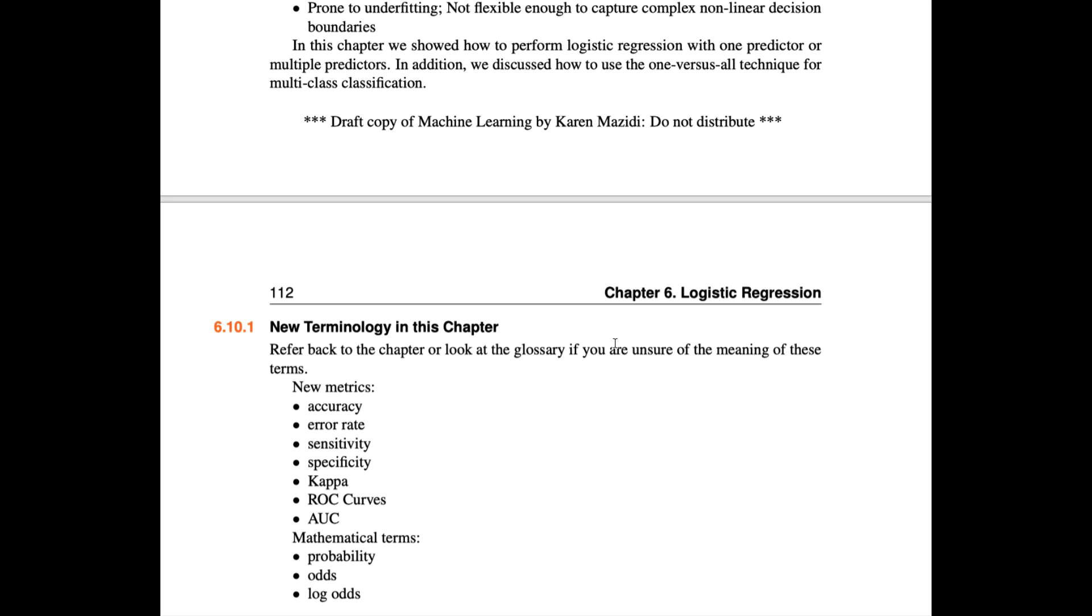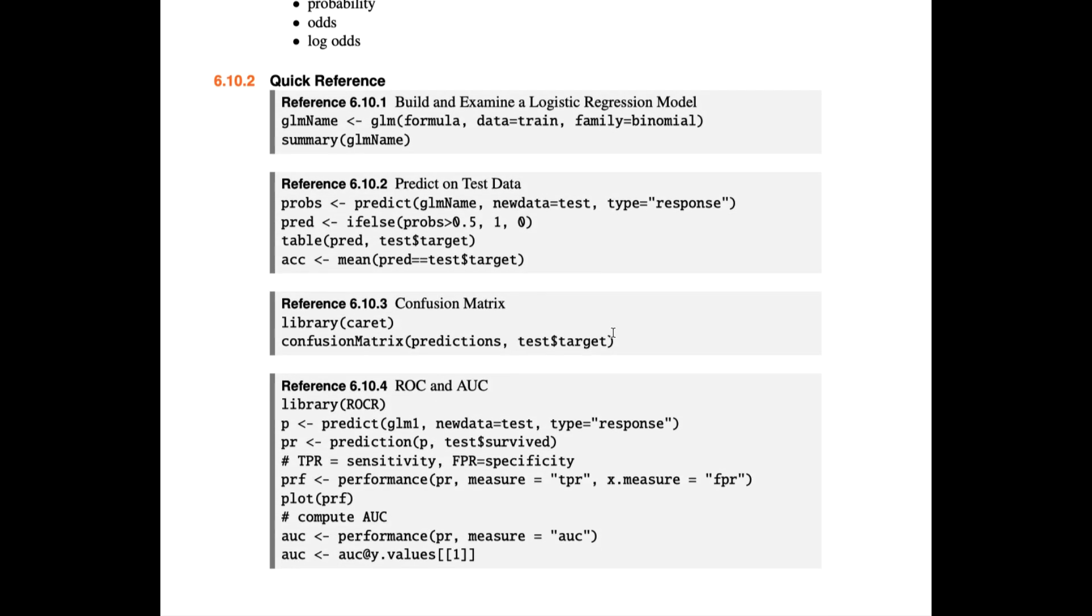We had some new terminology in this chapter, mainly having to do with the metrics. As always, I have a quick reference section at the end showing how to do logistic regression in R, how to extract the probabilities, transform those into predictions, output a confusion matrix and accuracy, as well as other metrics with the caret library. And finally, I show how to do the ROCR graph and the AUC metric. The next algorithm we'll learn is Naive Bayes, which learns probabilities from data. Before getting to that algorithm, the next video will be a short review of probability distributions.